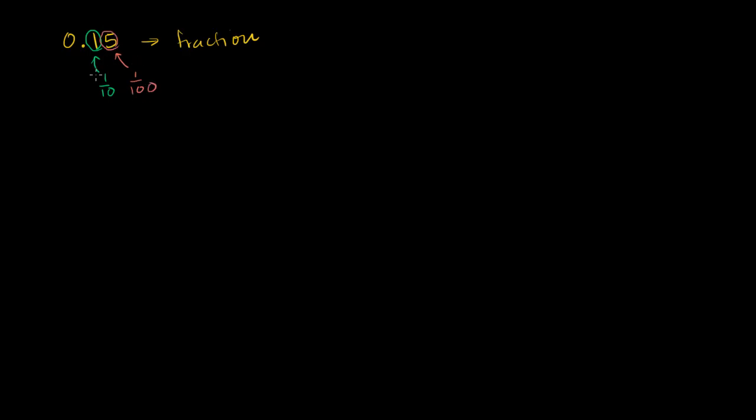So if I were to rewrite this, I can rewrite this as a sum of, this 1 represents 1 times 1 tenth. So that would literally be 1 tenth plus, and this 5 represents 5 times 1 hundredths. So it would be plus 5 hundredths. And if we want to add them up,